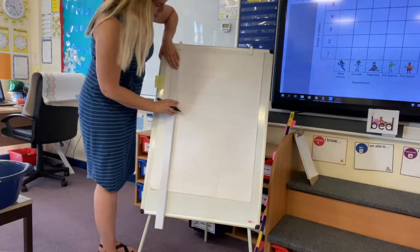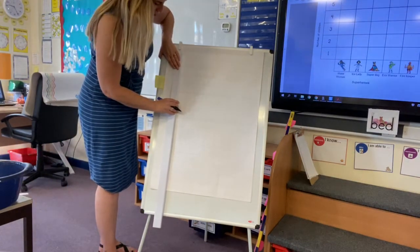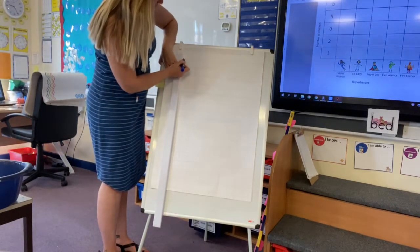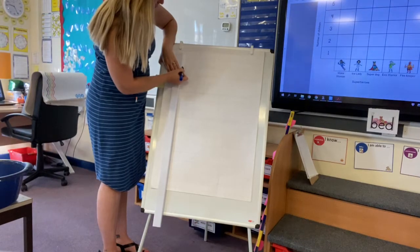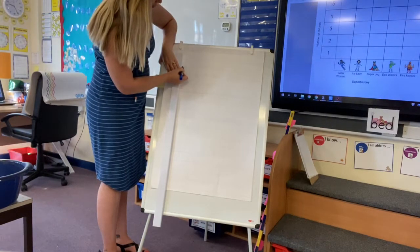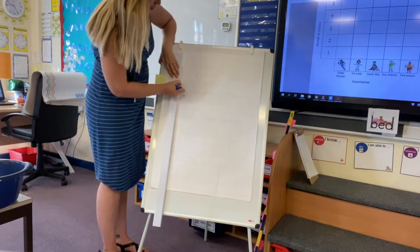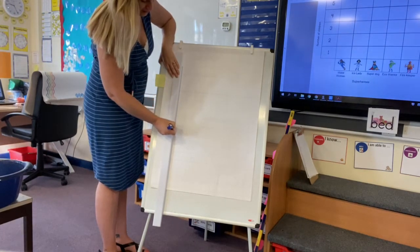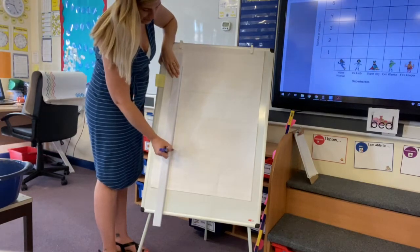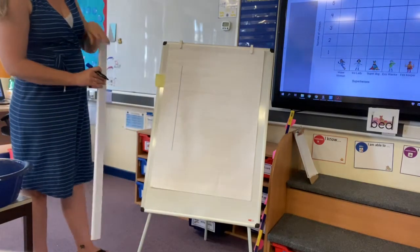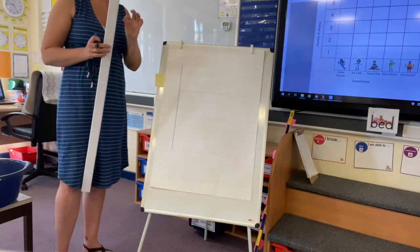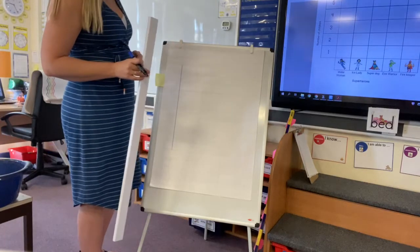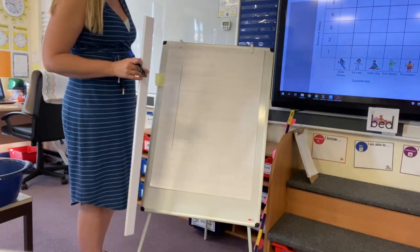Always use a ruler — we never draw lines without our ruler because we want to make sure it's nice and straight. From this line up here, let's go one further down so we've got room for our title, and we count up ten squares. If you're not using squared paper, you can use the centimetre guides on the ruler. If you're using squared paper, you can use the squares to count it.